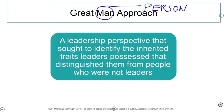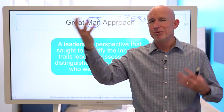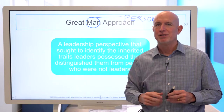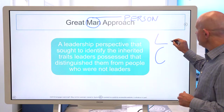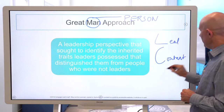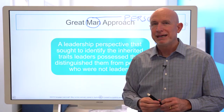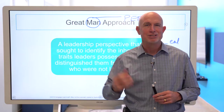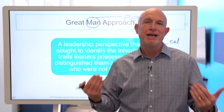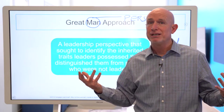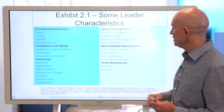The great person approach is a leadership perspective that sought to identify the inherited traits leaders possessed that distinguished them from people who were not leaders. We realize now that's a very simplistic perspective, because we also need to take into account not only the leader but the context in which they lead and the followers. Nelson Mandela would not have emerged as the leader he was without the context of apartheid and the tremendous support of so many followers — even though he had incredible leadership traits.